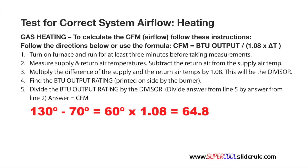The next thing we do is find the BTU output rating of the gas furnace. Be careful not to use the input — it must be the furnace output rating. We find this right here on the side of the furnace close to the gas valve. In this example, our output rating is 100,000 BTUs.